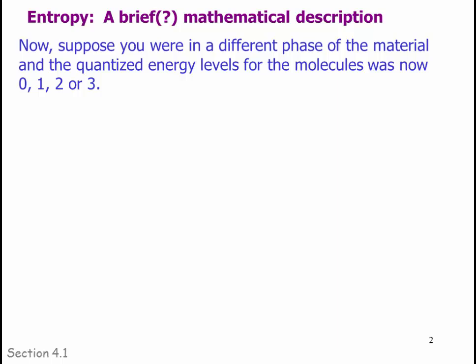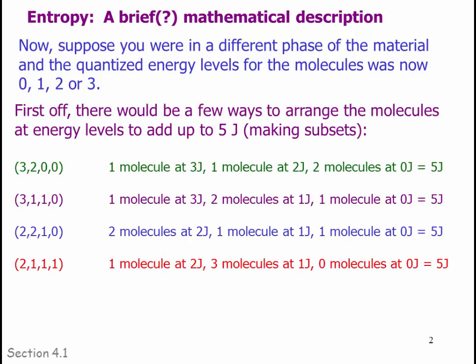Now suppose you were at a different phase of the material, and the quantized energy levels for the molecules were now 0, 1, 2, or 3. There would be a few ways to arrange the molecules at energy levels that add up to 5 joules. Being systematic: the highest energy level is 3, so to add up to 5 we could have 3, 2, 0 — or 3, 1, 1, 0 — or 2, 2, 1, 0 — or 2, 1, 1, 1. All 4 subsets have a net energy of 5 joules.